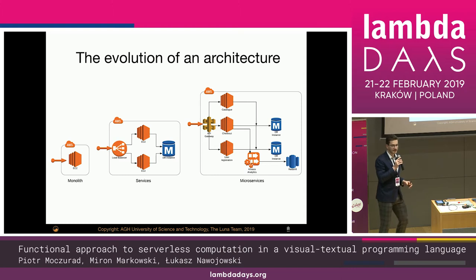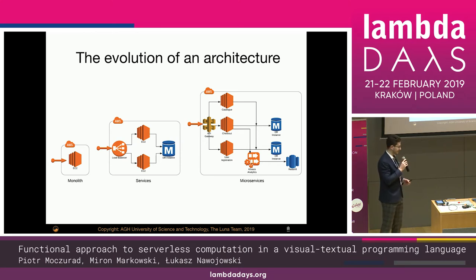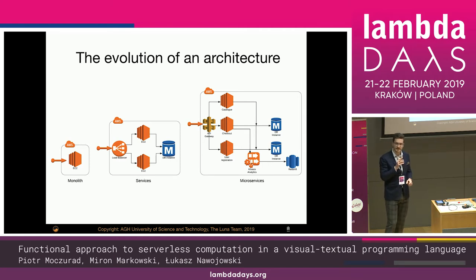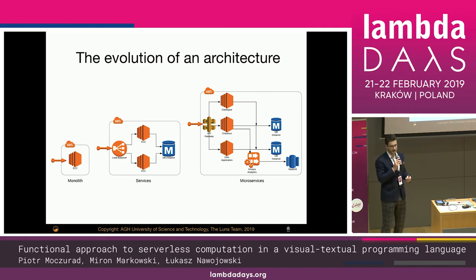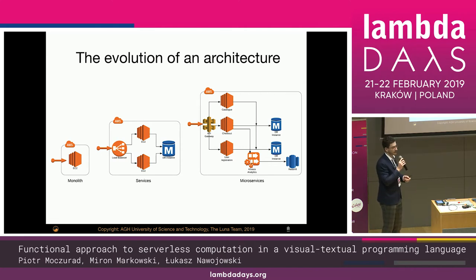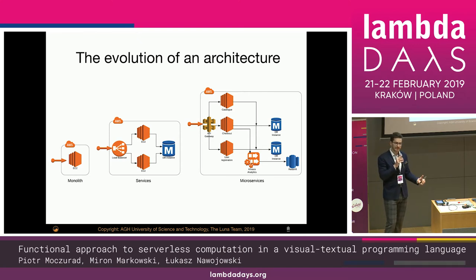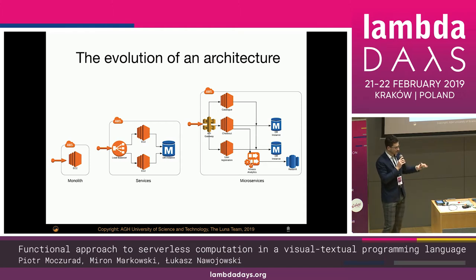I'd like you to look at a picture showing the evolution of an architecture. Say you have an e-commerce venture, a shop selling shoes. You start off with a very simple architecture — a single server on an EC2 instance. Right up to the point where it stops scaling, you add a second server, put a load balancer before them, then add a separate RDS instance so you can scale the DB separately.